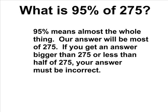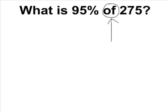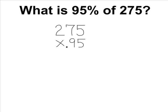The word 'of' in this problem clues us in that we should use multiplication to find the percentage of a number. To do this, we simply take 275 and multiply it by 95%, but we have to write it as a decimal. Because 95% means 95 out of 100, we write 95% as 95 hundredths. Now we can proceed with our multiplication.